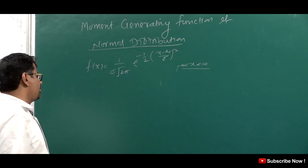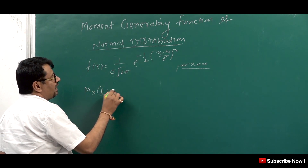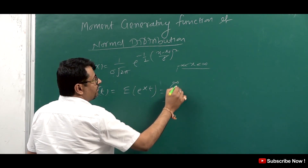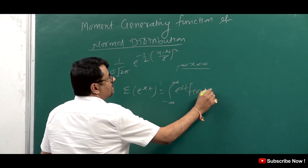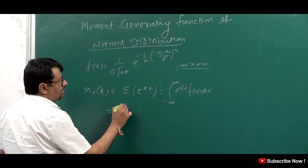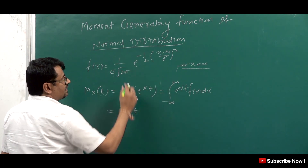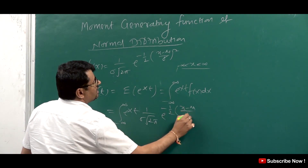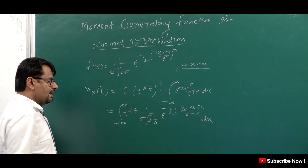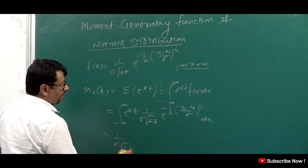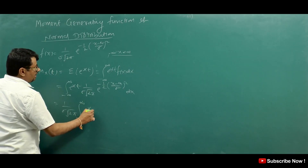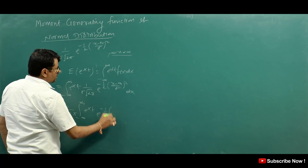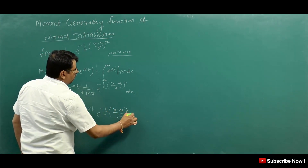We are going to start with the normal distribution MGF, that is the expected value of e to the power xt. When we expand it, we write the integral from minus infinity to infinity of e to the power xt times f(x) dx, where f(x) involves the term (x minus mu upon sigma) whole square.